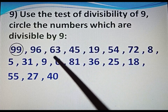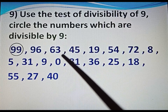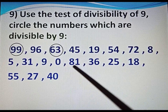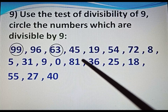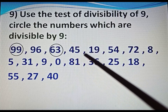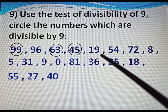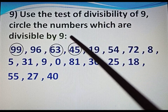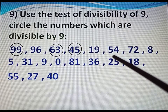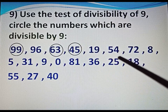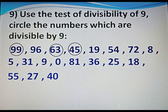Next number 63: 6 plus 3 equals 9, and 9 is divisible by 9, so 63 is divisible by 9. Circle 63. Next number 45: 4 plus 5 equals 9, divisible by 9, so circle 45. Next number 19: 1 plus 9 equals 10, not divisible by 9. Next number 54: 5 plus 4 equals 9, divisible by 9. Circle 54. Next number 72: 7 plus 2 equals 9, divisible by 9. Circle 72.